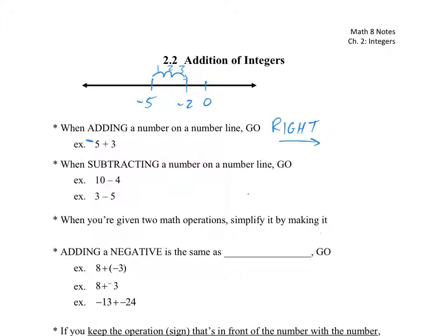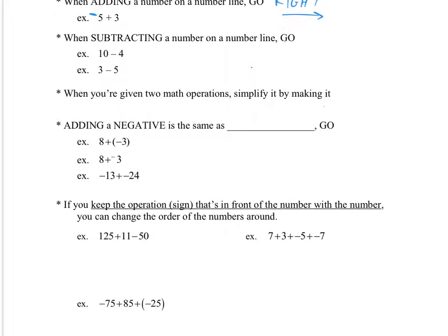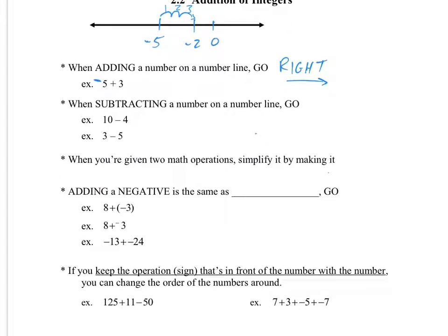So whenever you're adding a number to something, you're moving right that much on the number line. When subtracting a number, so 10 minus 4 gives us 6. When I'm on a number line, I'm starting at 10. To get down to 6, I had to move to the left. So you go left. You're going left on a number line when you subtract.